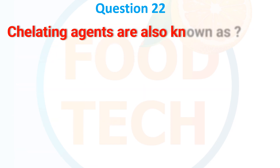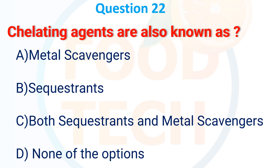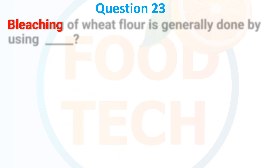Chelating agents are also known as: A. Metal sequestering scavengers, B. Sequestrants, C. Both sequestrants and metal scavengers.